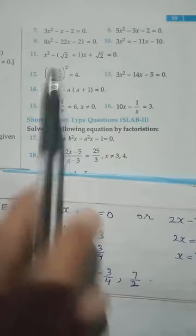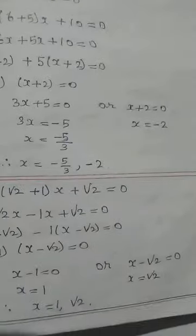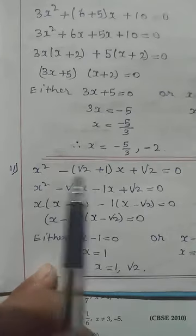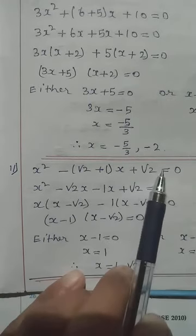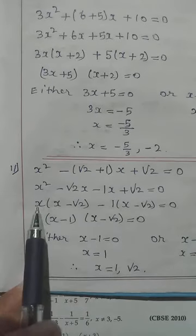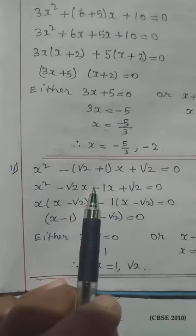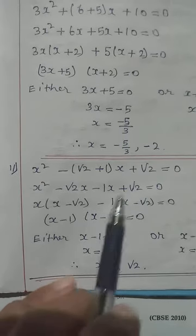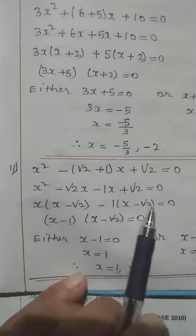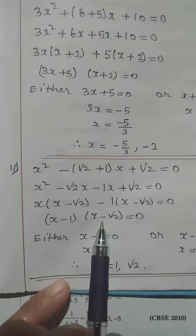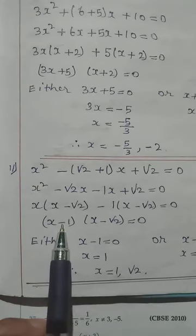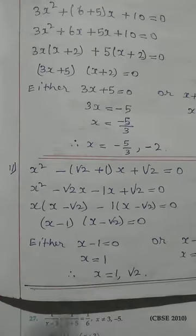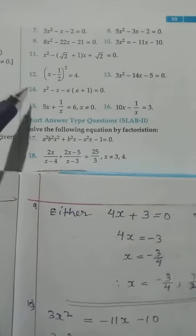Question number 11: the middle term is already split for us, so our work is only to take common factors. Remove the bracket first, then take common. We have x squared minus root 2 times x minus x plus root 2. Take x common from the first two terms, leaving x minus root 2. From the last two terms, take 1 common, leaving x minus root 2. Both brackets are the same: (x minus root 2)(x minus 1) equals 0. So the values of x are 1 and root 2.